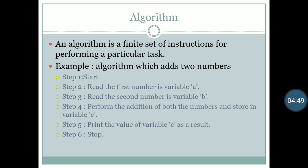If we make tea step by step, that step-by-step solution will be known as an algorithm. Here we have an example of adding two numbers. Step one: start. Step two: read the first number into variable A. Step three: read the second number into variable B. Step four: perform the addition of both numbers and store in variable C, i.e., C = A + B. Step five: print the value of variable C as the result. Step six: stop. This step-by-step solution of the addition problem is called an algorithm.